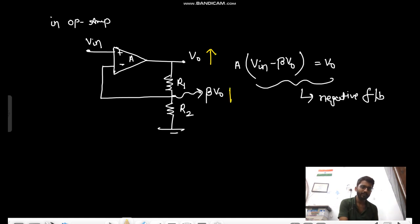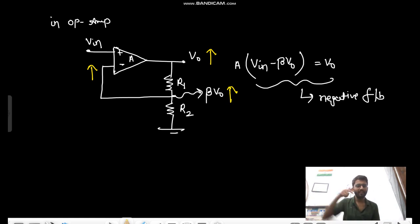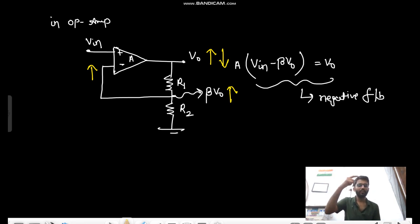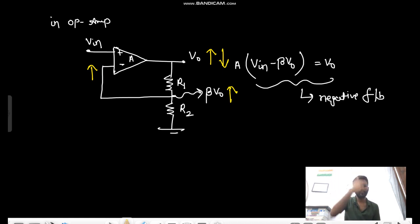If V_naught goes up, this node goes up. If the negative terminal is getting up, output would go down, because op-amp output = A*(V_positive - V_negative). So if V_negative is going up, V_naught will go down. You try to get a high value of V_naught, but eventually V_naught is going down — you're going towards stability. That's the concept of negative feedback.